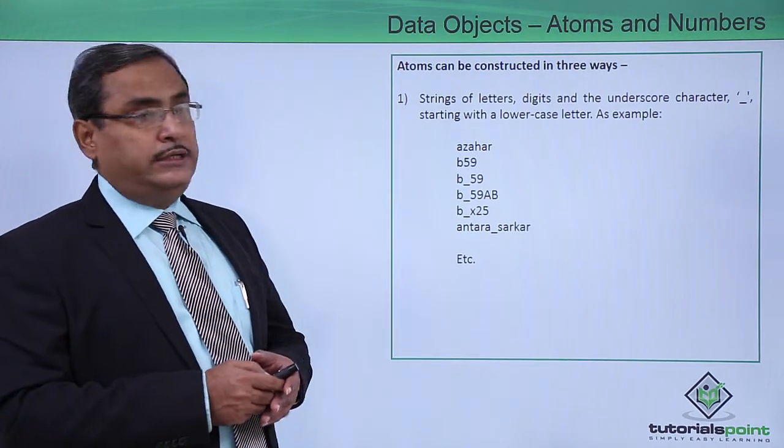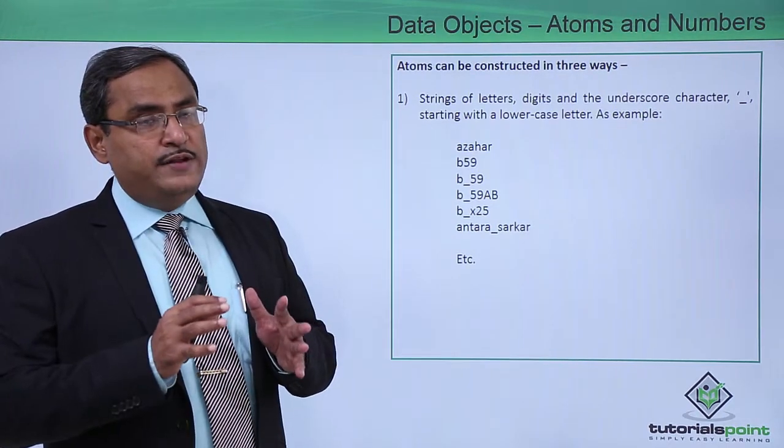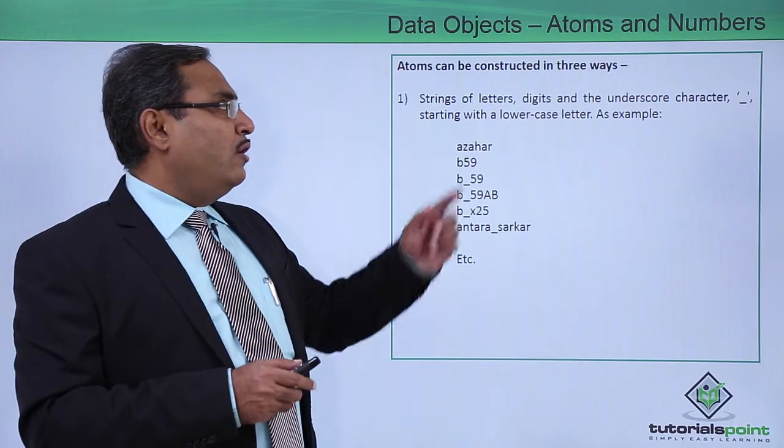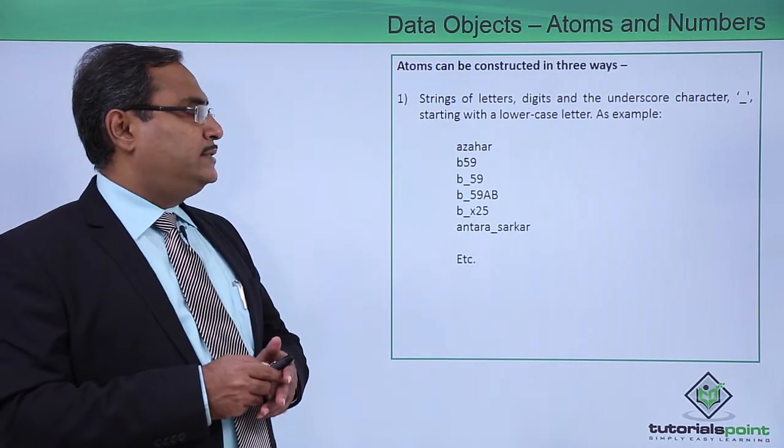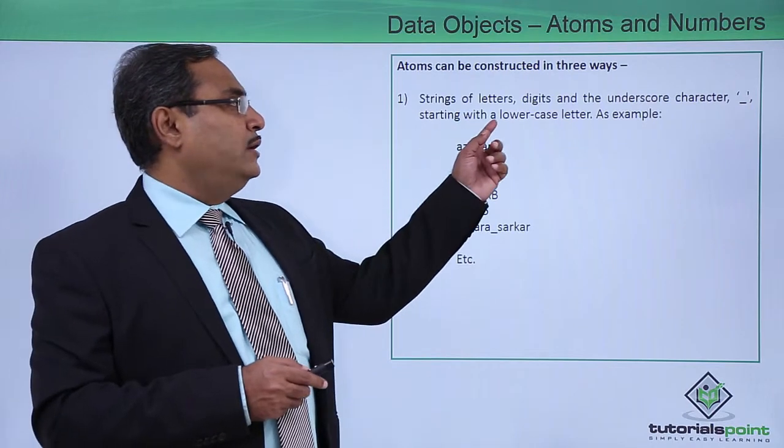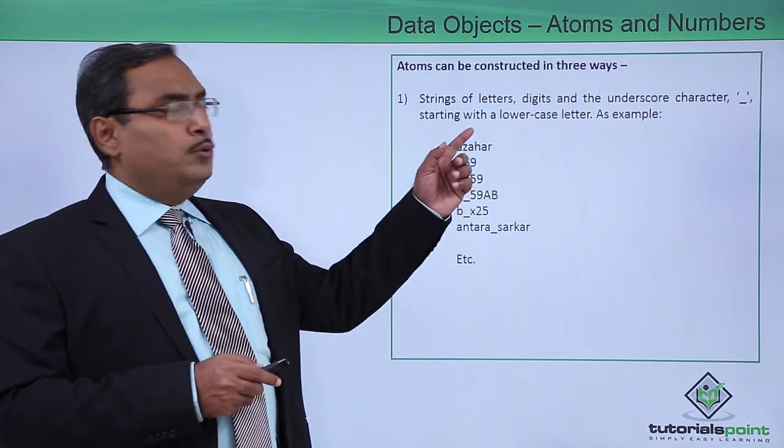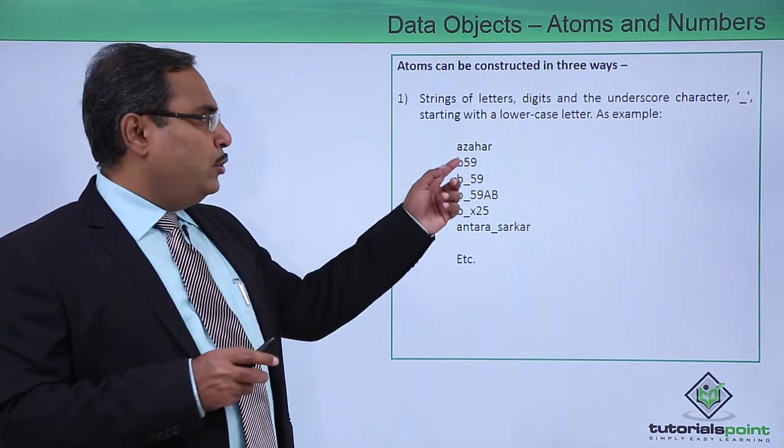Atoms can be constructed in mainly three different ways. The string of letters, digits, and the underscore character starting with a lowercase letter will be known as an atom. As an example, you can go for this.